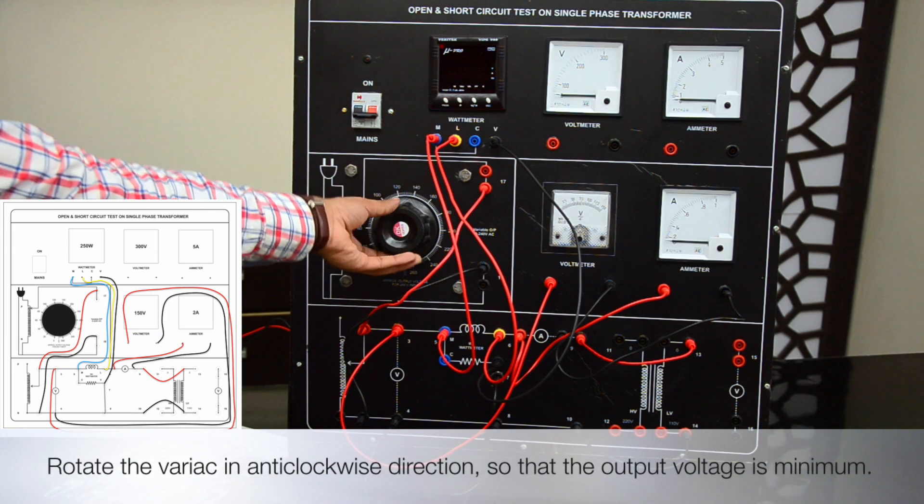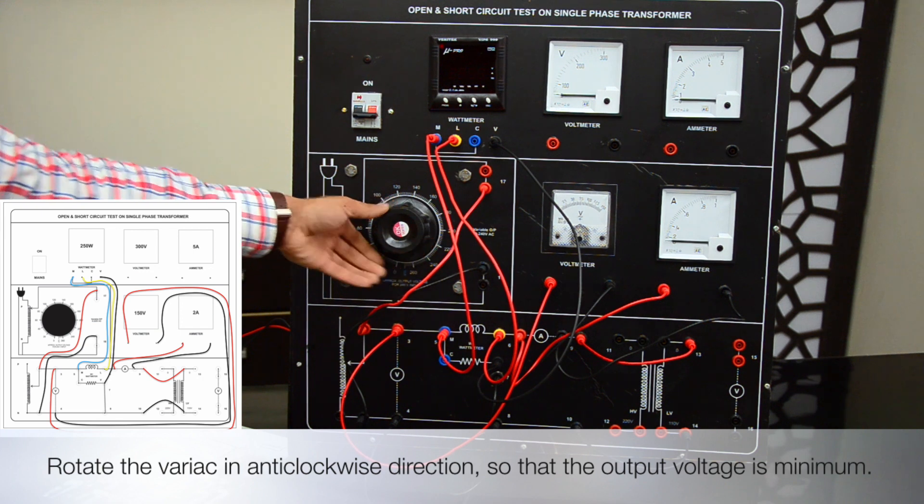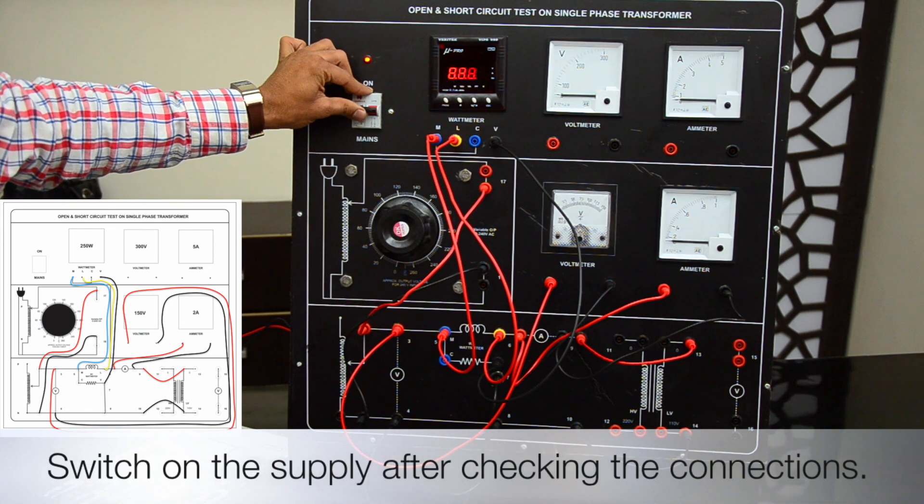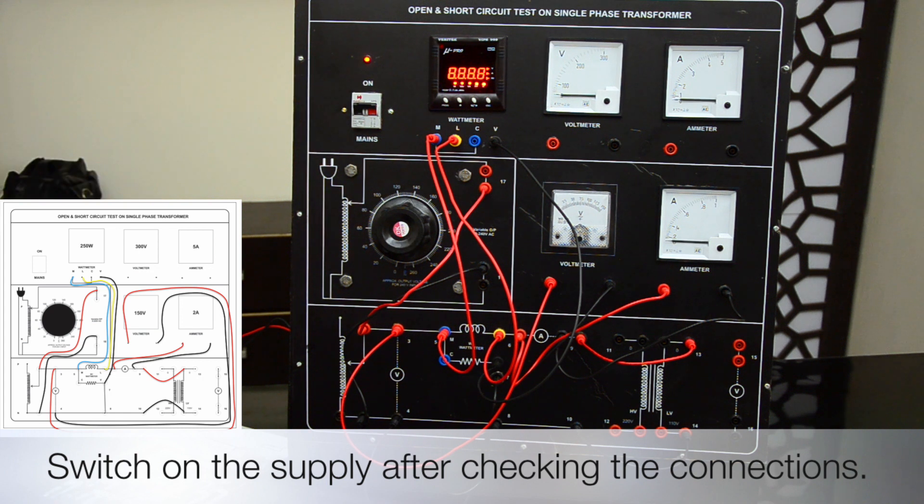Rotate the variac in anti-clockwise direction so that the output voltage is minimum. Switch on the supply after checking the connections.